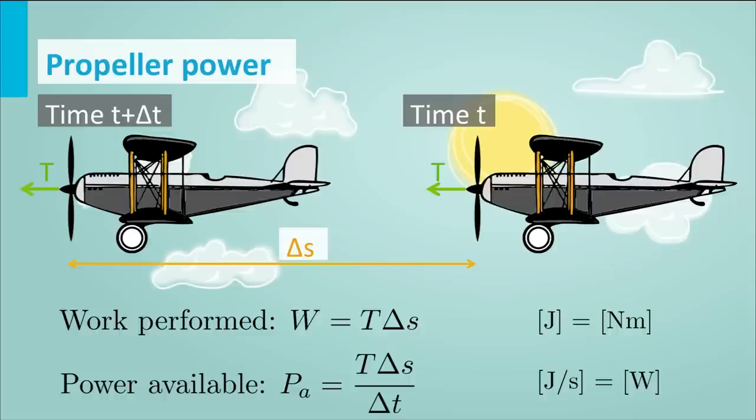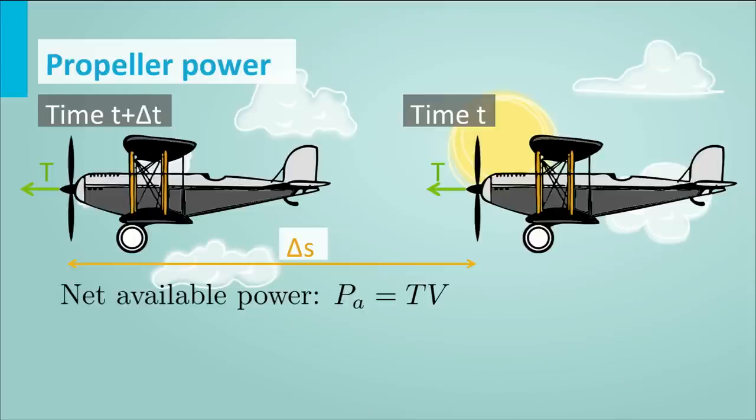Looking more closely at this equation, apart from work divided by time, we can also express it as thrust times the distance travelled per time unit. Distance per time unit is of course speed, so the propulsive power — the power available — equals thrust times airspeed V0. This is an important equation: PA equals T times V, the net power available after the propeller has converted shaft power.